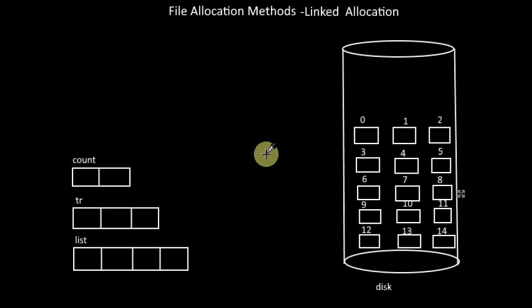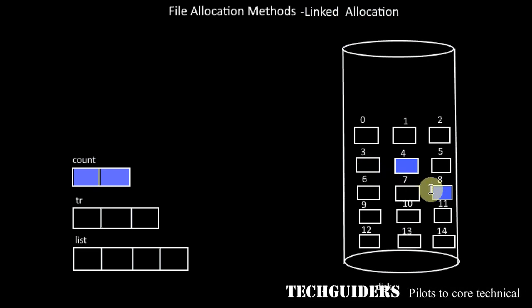In order to overcome the limitations of contiguous allocation, we go for non-contiguous allocation. One way of non-contiguous allocation is linked allocation. Here the file may not be allocated with a contiguous set of disk blocks. The disk blocks which are allocated to the file may be scattered somewhere on the disk.